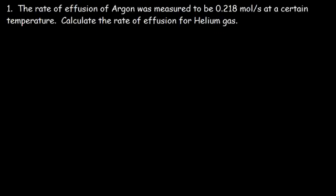Number one: the rate of effusion of argon was measured to be 0.218 moles per second at a certain temperature. Calculate the rate of effusion for helium gas. According to Graham's Law of Effusion, the rate of effusion is inversely related to the square root of the molar mass of a gas. So as the molar mass of a gas increases, the rate of effusion decreases.